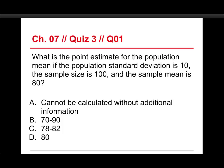The first question is: what is the point estimate for the population mean if the population standard deviation is 10, the sample size is 100, and the sample mean is 80? The choices are it cannot be calculated without additional information, or it's 70 to 90, or it's 78 to 82, or it's 80.